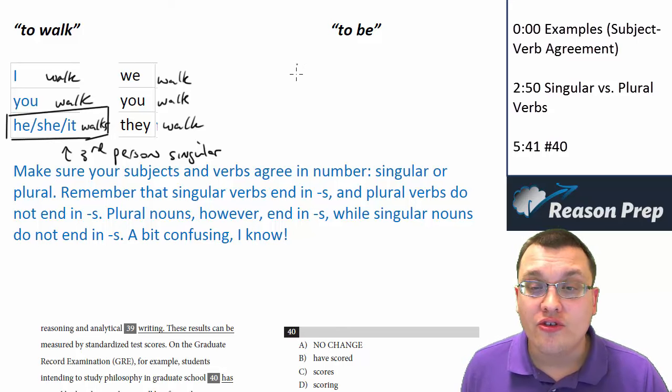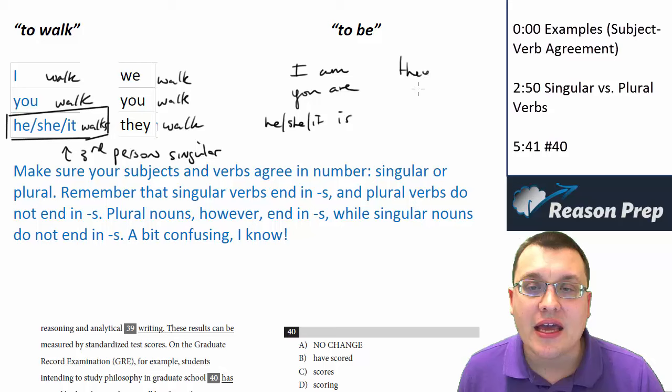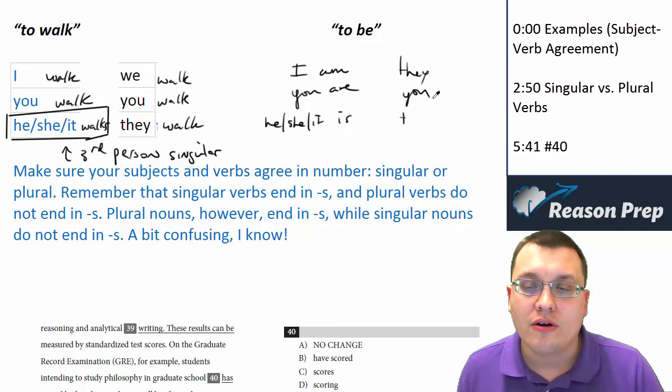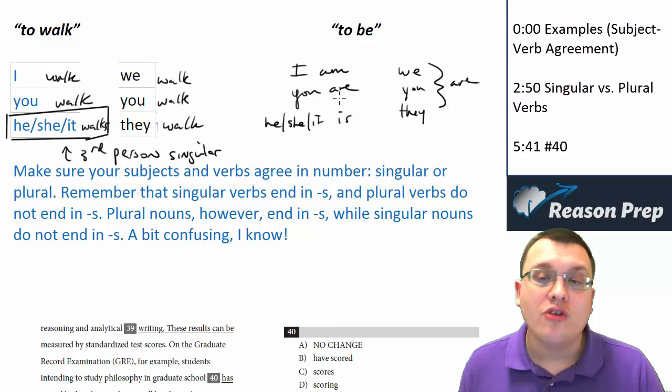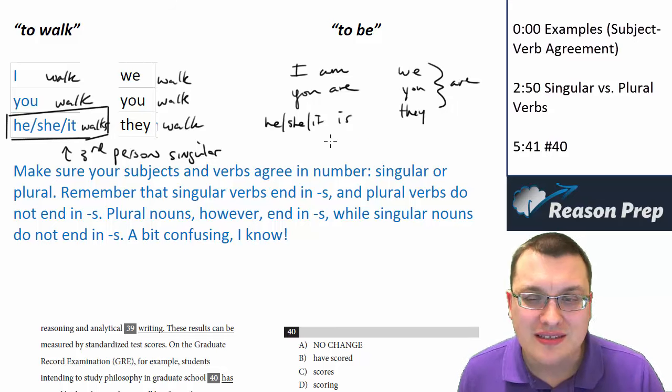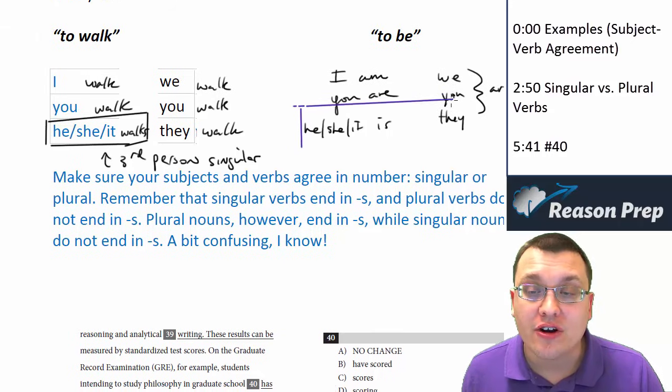What about to be? For to be, we have an irregular verb, and it's a little bit different here. But for present tense, I am, you are, he, she, or it is. And then they, you, or we, you, and they are all the same. They are all are. So a little bit more of a change, but more or less still pretty regular. Again, the difference really that we want to focus on is in third person.